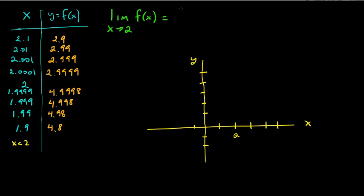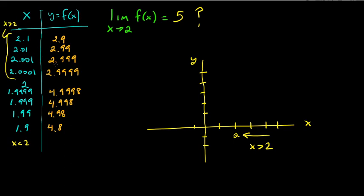So you might conclude that the limit has to be 5. But remember, when we find the limit, we have to look on both sides — both left and right. Coming from the right side, when x is bigger than 2 — at 2.1, 2.01, 2.001 — as x gets closer and closer to 2, the y-values look like they're getting closer to 3.